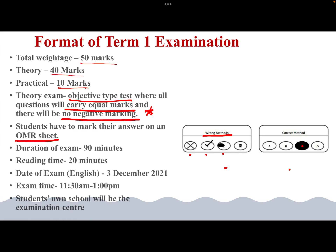There is one more change in the CBSE pattern of examination this time. CBSE is providing one extra circle in front of every question after option D. This extra circle will be useful in the case where you think the answer you have darkened is the wrong one and you want to change it. For example, if you have darkened option C by mistake and want to correct it, you can write your correct answer — say, option A — in this extra fifth circle provided at the end of every question.